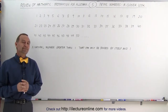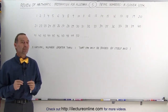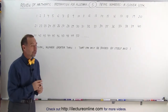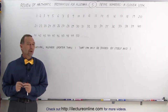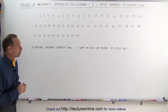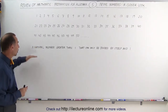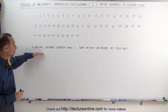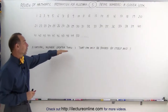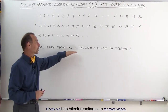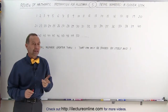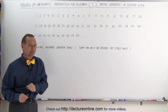Welcome to Electron Line. Now let's talk about prime numbers. What is a prime number? By definition, a prime number is a natural number greater than one that can only be divided by itself and one.